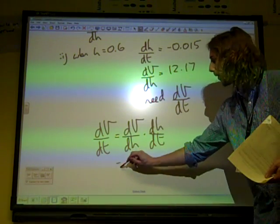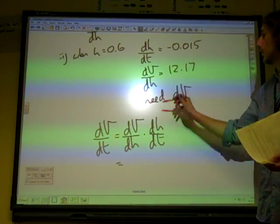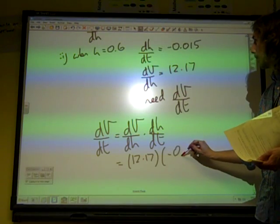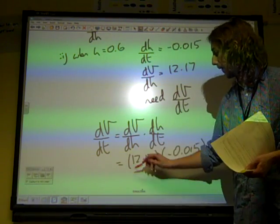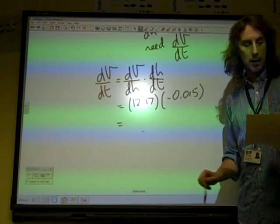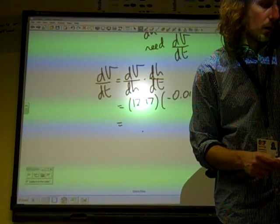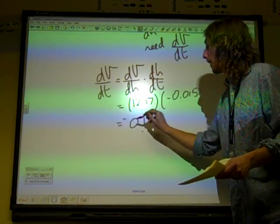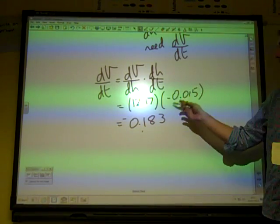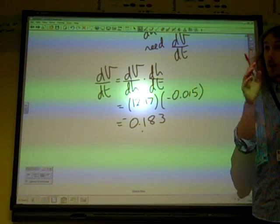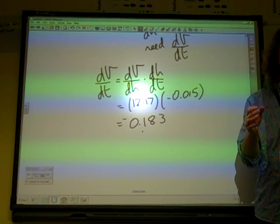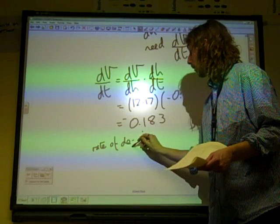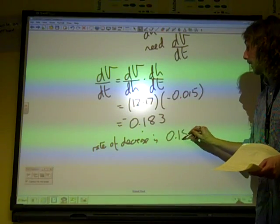Well, we already know these things. We've already got dv by dh is 12.17. dh by dt is minus 0.015. We multiply them together. 0.183. And actually it's minus 0.183, isn't it? Because we've got that as a line sign. And the question says, find the rate at which the volume is decreasing. So the rate of decrease is 0.183.